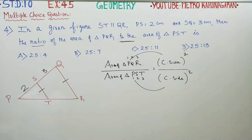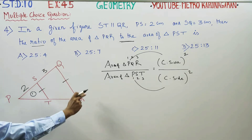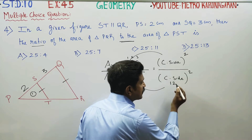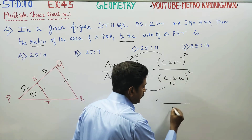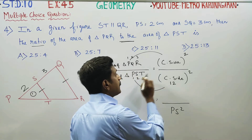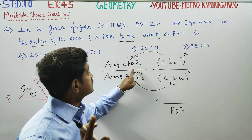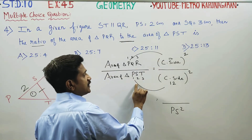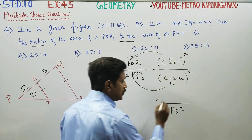Now, what is PS? PS is the corresponding side. For the area of triangle PQR over the area of triangle PST, we use PQ as the corresponding side. The ratio of areas equals the square of the ratio of corresponding sides — using PQ over PS.